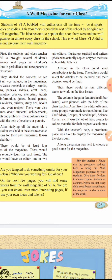Apart from the editorial team, more groups were made to run columns like craft ideas, recipes, 'I need help', science corner, etc. It was the job of these groups to collect material for their respective columns. With the teacher's help, a prominent place was fixed to display the magazine in the classroom — such as the front wall — so that parents, teachers, other students, or school guests could read and view the magazine.